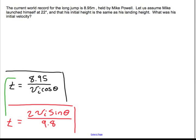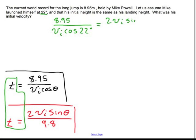So now what I will do is I'm going to set the equations equal to each other through time. So I have 8.95 divided by VI cosine. Let's go ahead and get this 22 in there. So remember that was actually given to us is equal to 2 VI sine theta divided by 9.8. Notice that on the left hand side, the VI is in the denominator. And on the right hand side, it's in the numerator. That means that those are actually going to combine to a VI squared that's sitting over there. And I want to get everything else away from it.